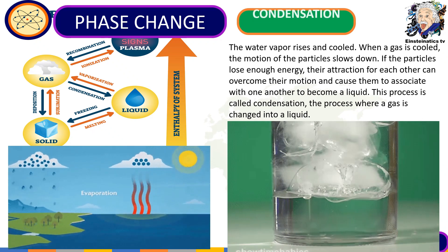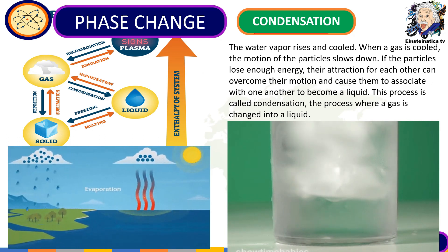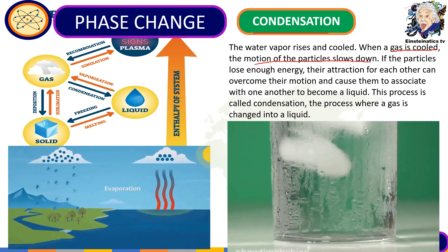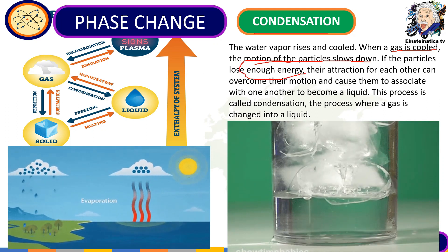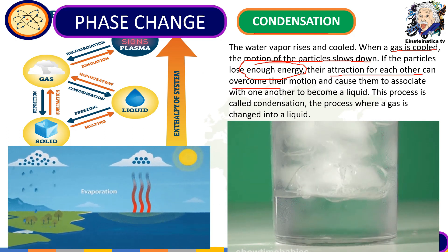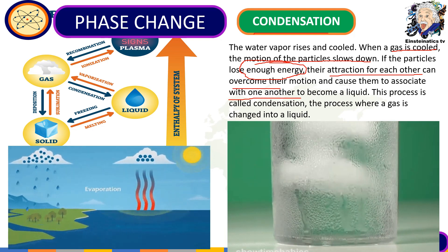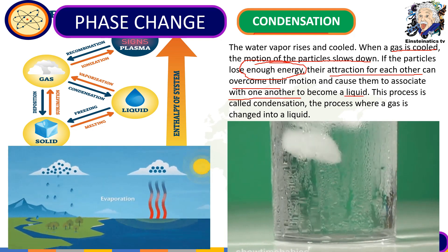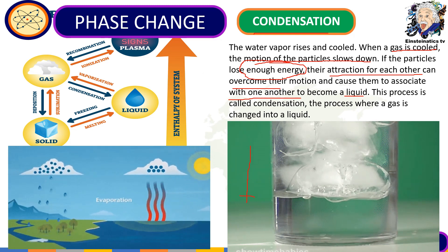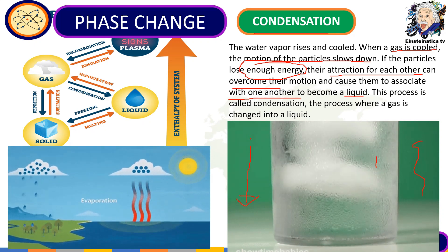The next physical change is known as condensation. Condensation happens when a gas is cooled and the motion of the particles slows down. If the particles lose enough energy due to loss of heat, the attraction between them overcomes their motion, causing them to associate with one another. As a result, gas particles return to a liquid state — illustrated here by a glass with ice, where gas particles around it condense and form water droplets.